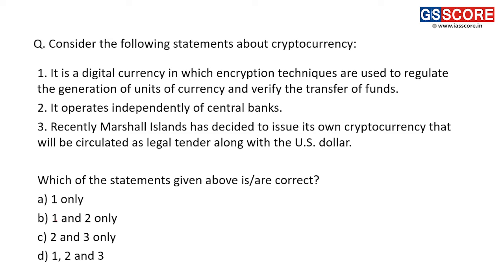Next question: consider the following statements about cryptocurrencies. Cryptocurrencies are digital currencies based on cryptography. Statement one: it is a digital currency in which encryption techniques are used to regulate the generation of units of currency and verify the transfer of funds. This statement is correct — cryptocurrencies are digital currency and use encryption for generating the currency and verifying transactions. First statement is correct.